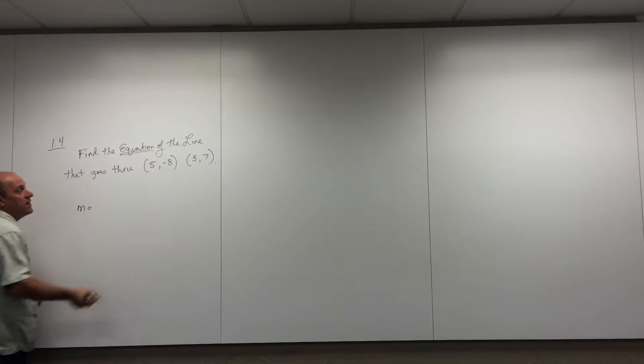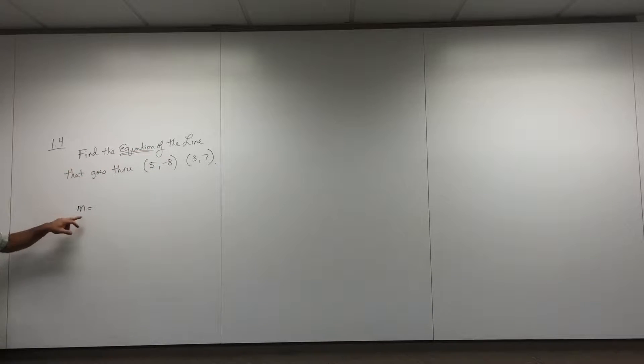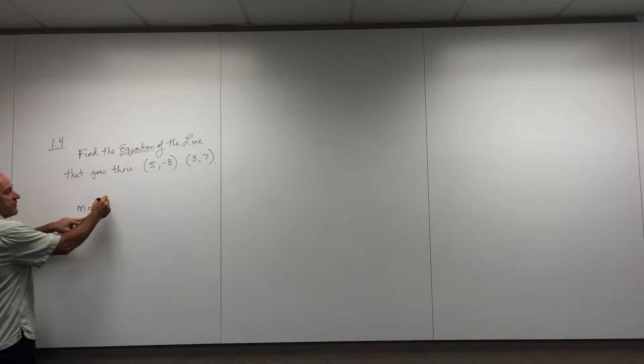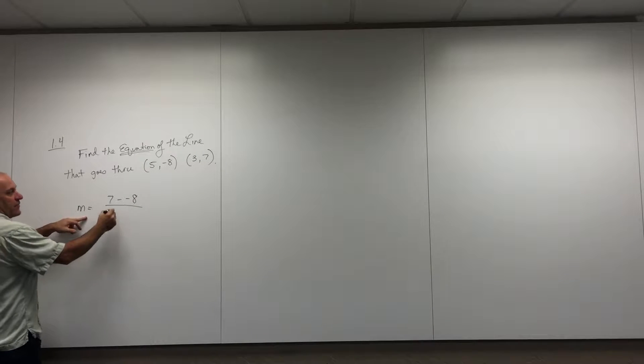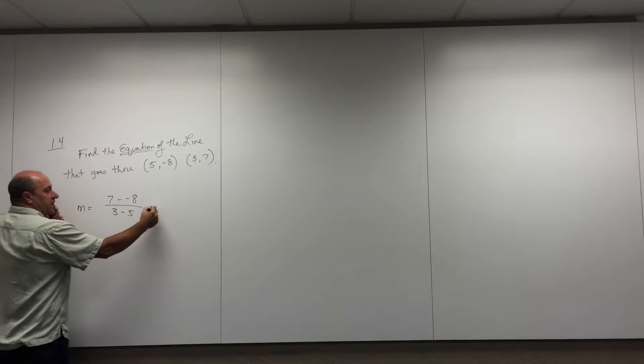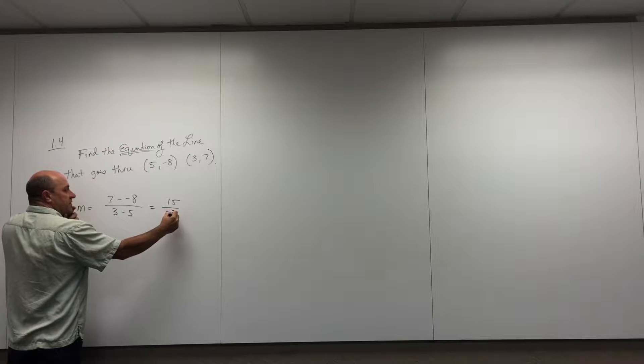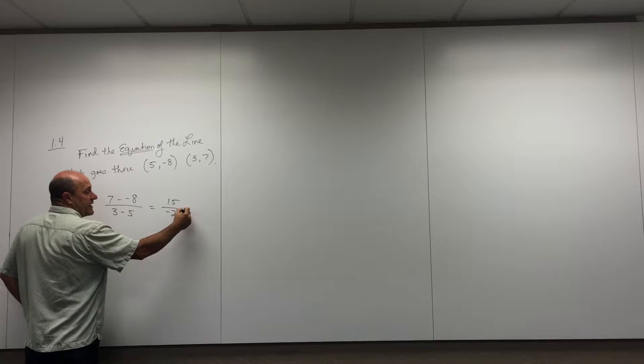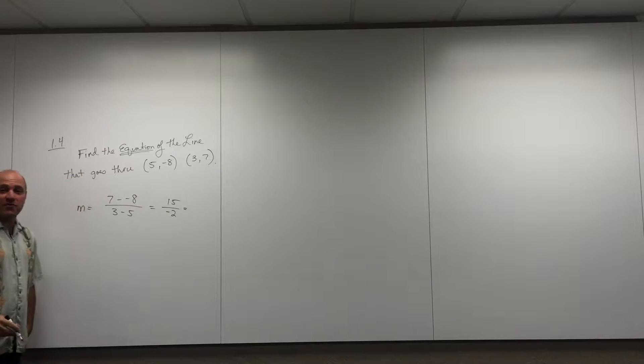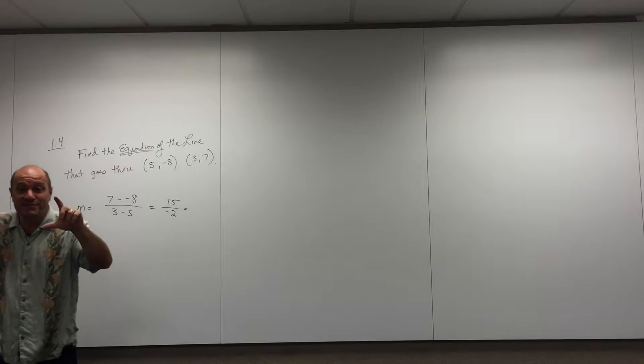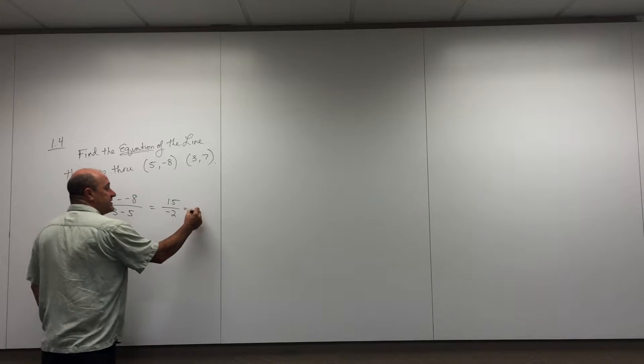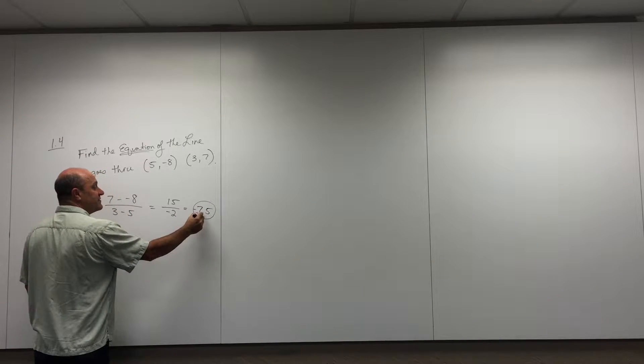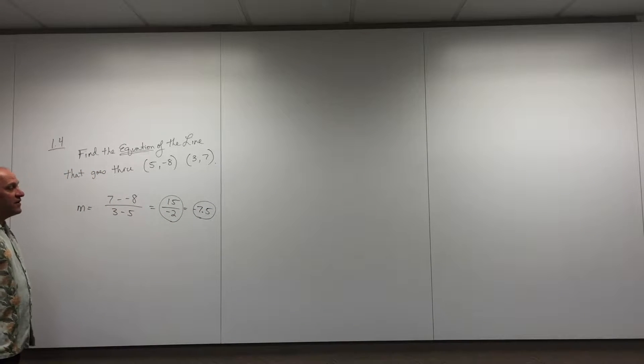Ultimately, the question wants the equation, so that's where we're going. But first, we need the slope. The slope is that formula where you subtract your y's. I'm going to go 7 minus negative 8, that's me subtracting my y's, and then 3 minus 5. I guess I'm going to get 15 over negative 2. I don't mind making that a decimal. When you're doing the MyMathLab homework, they'll say sometimes they want a fraction or a decimal. It's either 7.5 or negative 15 halves.